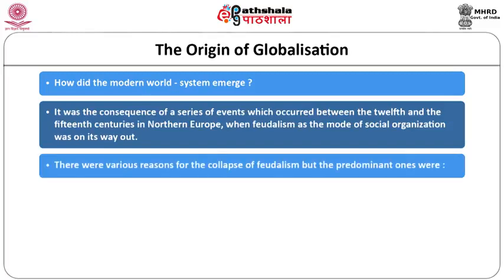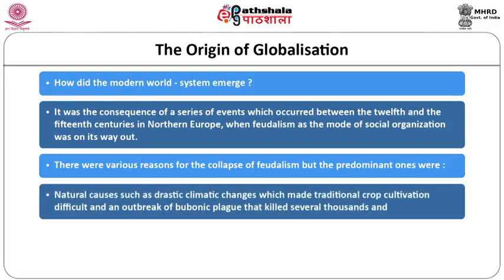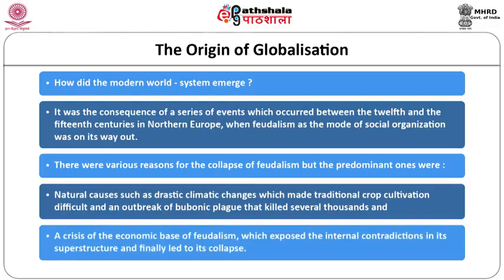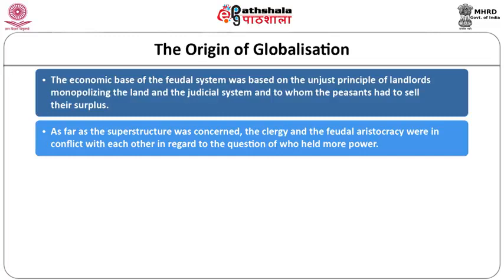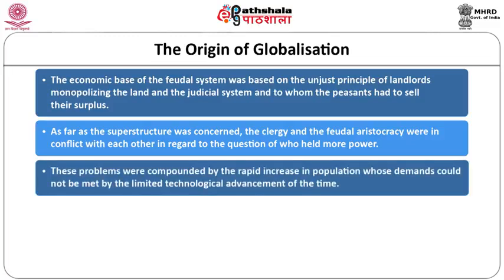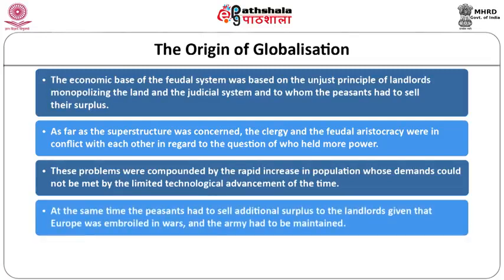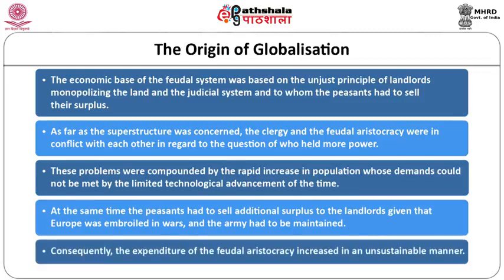There were various reasons for the collapse of feudalism, but the predominant ones were natural causes — drastic climate change which made traditional crop cultivation difficult, and an outbreak of bubonic plague that killed several thousands across Europe. This created a crisis of the economic base of feudalism, which exposed its internal contradictions and led to its collapse. These problems were compounded by rapid population increase and the unsustainable expenditure of the feudal aristocracy.